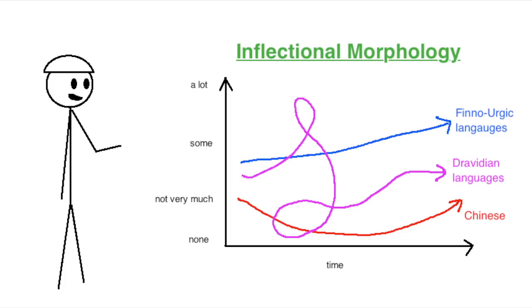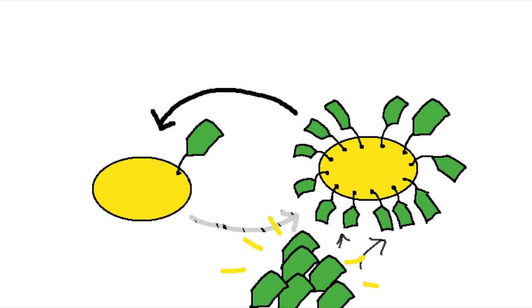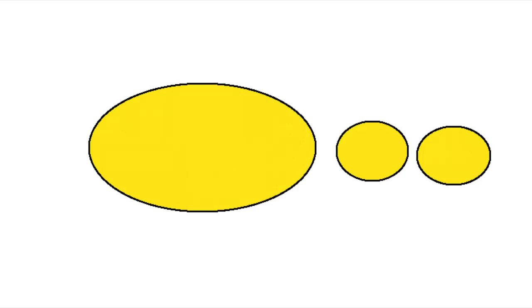That same pattern doesn't hold for non-Indo-European languages. Languages can gain inflectional morphology just as easily as they can lose them, but it can be harder to notice because new inflectional morphology doesn't just appear out of nowhere.